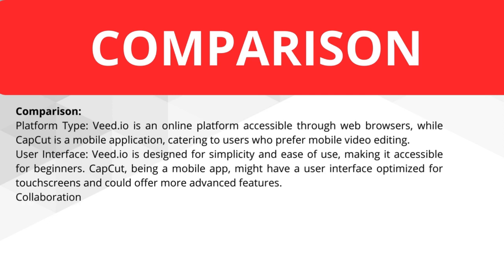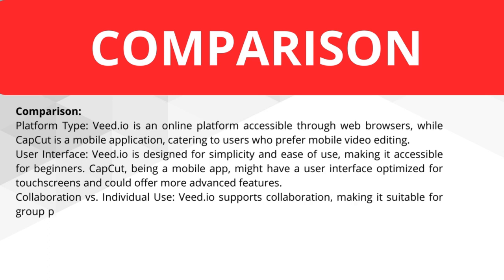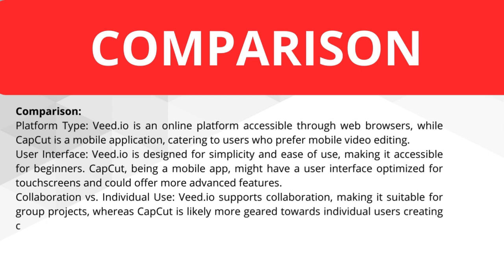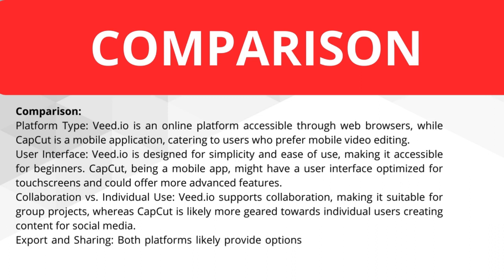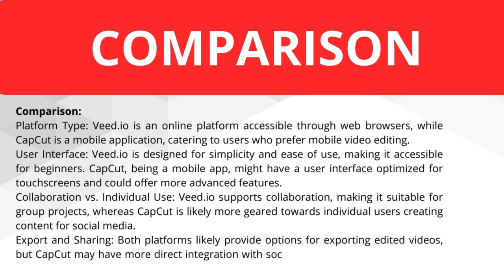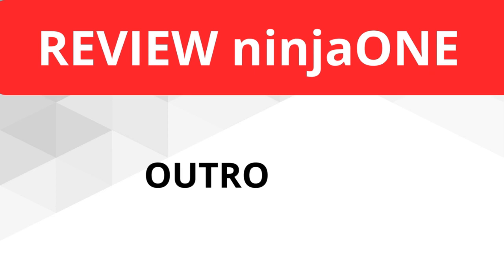On collaboration versus individual use: Vite.io supports collaboration, making it suitable for group projects, whereas CapCut is likely more geared towards individual users creating content for social media. For export and sharing, both platforms provide options for exporting edited videos, but CapCut may have more direct integration with social media platforms for seamless sharing. I personally use CapCut for my own use, and if you want to use Vite.io, it comes with a pro plan where you can form teams and work on the same project.